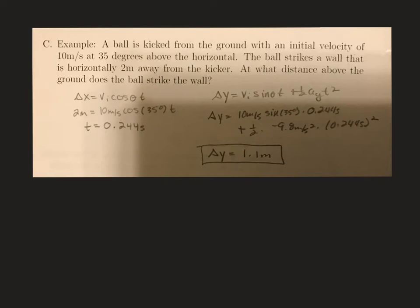Alright, so we have an example of a problem where a ball is kicked from the ground with an initial velocity of 10 meters per second, 35 degrees above the horizontal. The ball strikes a wall that is horizontally 2 meters away from the kicker.